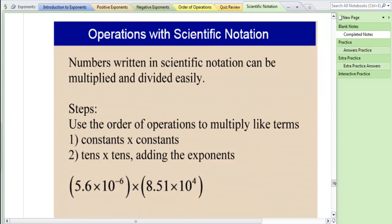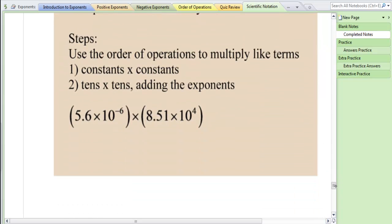Let's look at some more examples. In this example you're going to do the same thing that we did before. You're going to multiply your constants together and multiply your base tens together and add your exponents using your exponent rule. You can use a calculator to multiply 5.6 times 8.51, but please do not use a calculator for anything else. Once you get your answer you may need to change it into scientific notation if it's not already. So give that a shot.